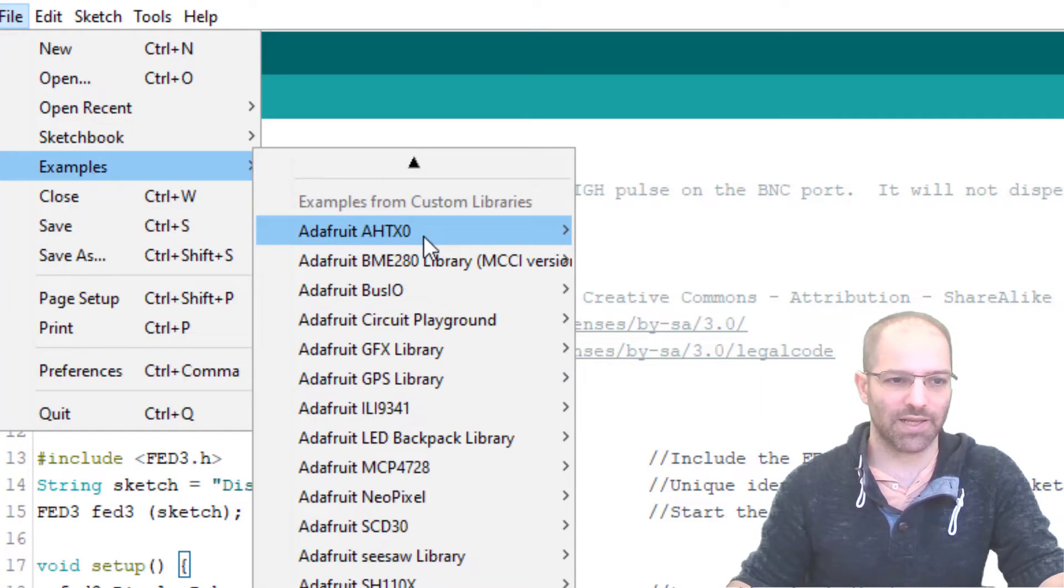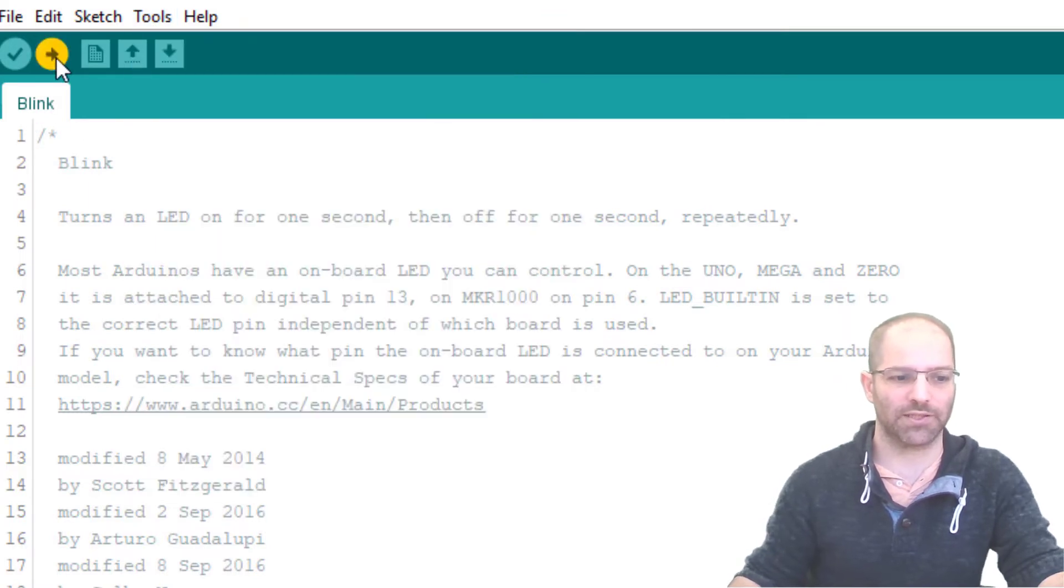You can flash one of the FED examples. I often, for flashing examples, I like to use this blink. It's a very simple program. Let's go over here and let's flash it. What this program is going to do is blink this red LED on for one second and then off for one second. And now it's been flashed. So hopefully you can see right there that it's turning on once a second and off once a second.